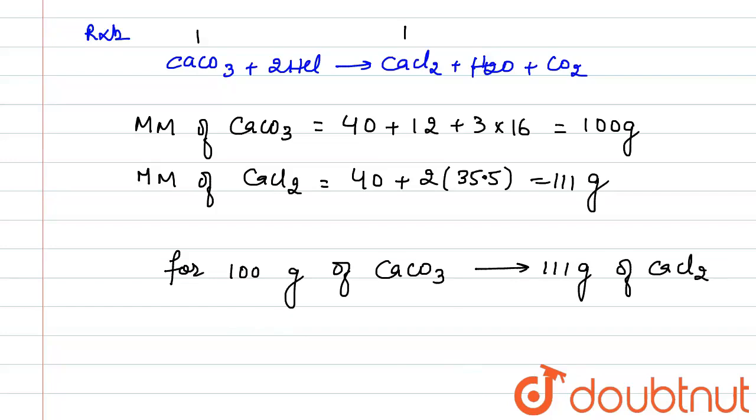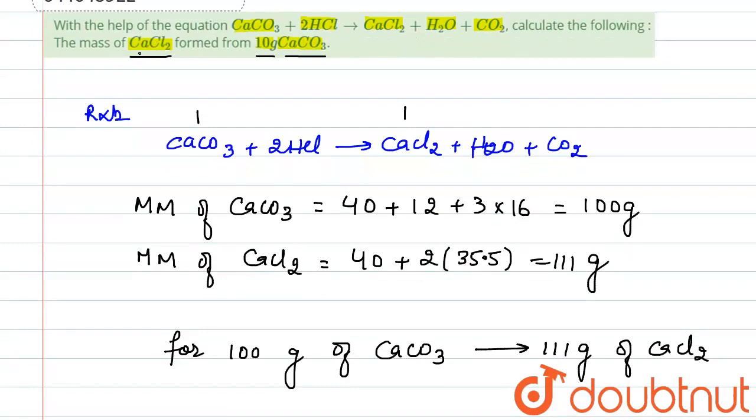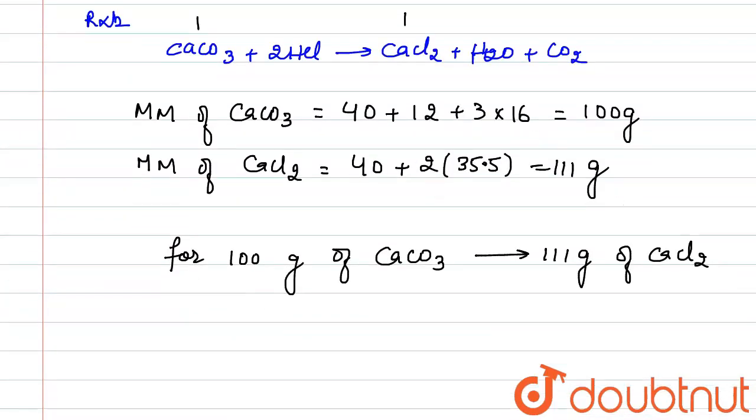The question is asking the mass of CaCl2 formed from 10 gram of CaCO3. So the mass of CaCl2 formed from 10 gram of calcium carbonate, for 10 gram of CaCO3, this will be equals to 111 divided by 100, this will be for 1 gram of CaCO3 and we are multiplying this by 10 for 10 gram of CaCO3. So this will be equals to 11.1 gram. So 10 gram of CaCO3 will form 11.1 gram of CaCl2.